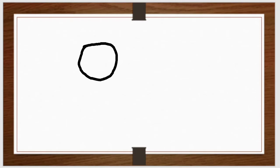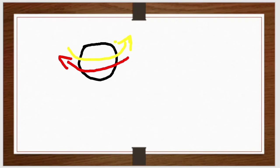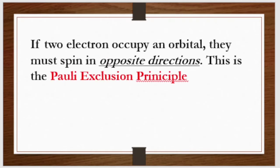When an electron occupies an orbital, the electron spins on its axis. When another electron comes and occupies the same orbital, that electron revolves in the opposite direction on its axis. So if two electrons occupy an orbital, they must spin in opposite directions. This is the Pauli Exclusion Principle.